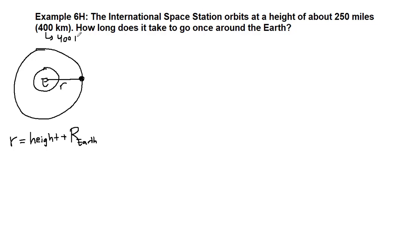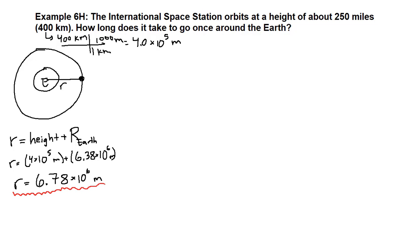And we will be given the radius of the Earth in any reference sheet we need for tests or exams. So first of all, that height is 400 kilometers. If we take 1 kilometer equals 1,000 meters, we get that this is 4 times 10 to the 5th meters. The radius of the Earth is 6.38 times 10 to the 6th, also in meters. And so the radius here, which we will use throughout the problem, is 6.78 times 10 to the 6th meters.